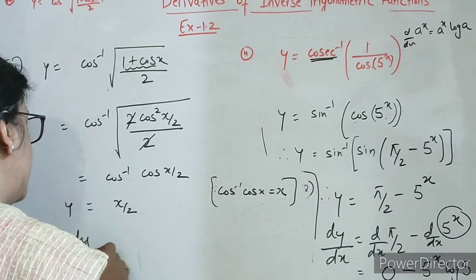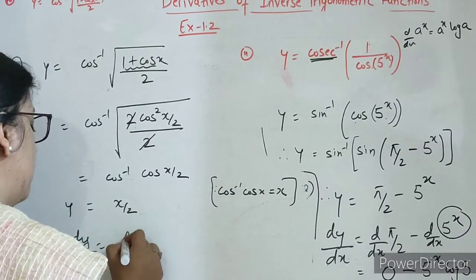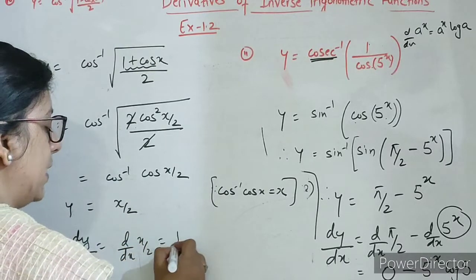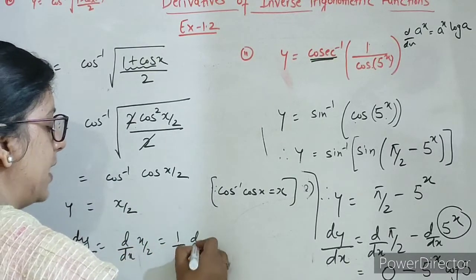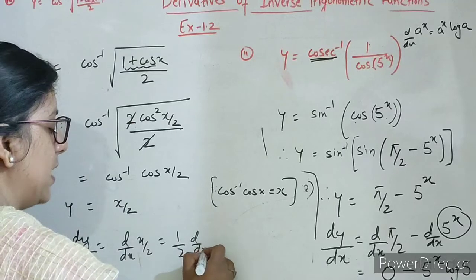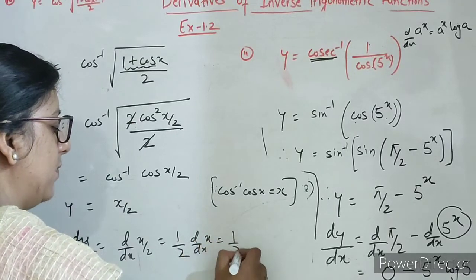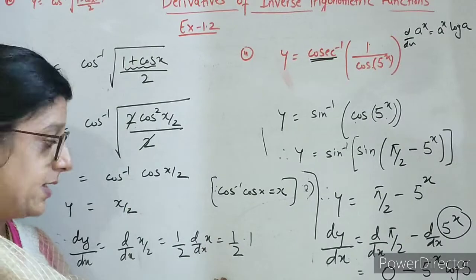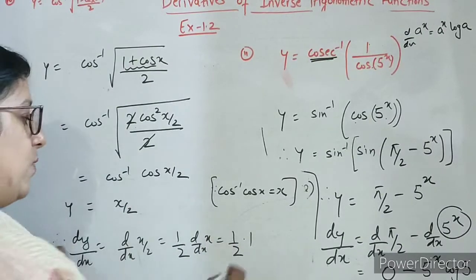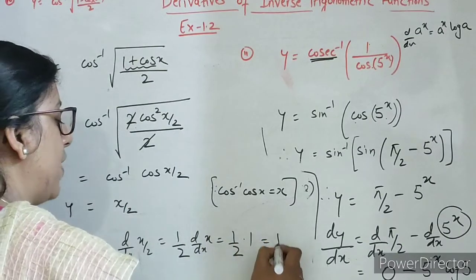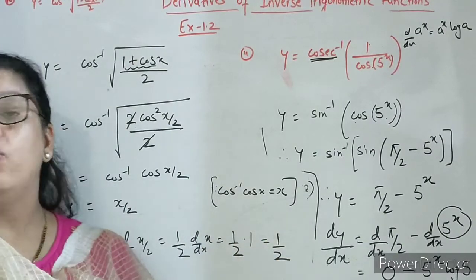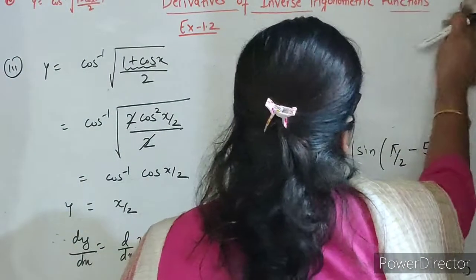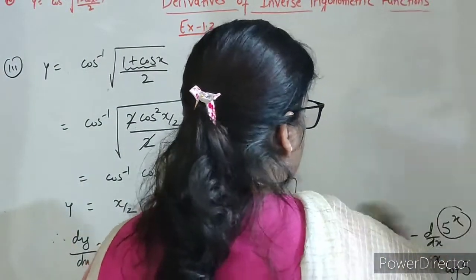So differentiating on both the sides: x by 2 ka derivative — 1 by 2 constant bahar aa jayega. And what is derivative of x? x ka derivative with respect to x is 1. So final answer is 1 by 2.